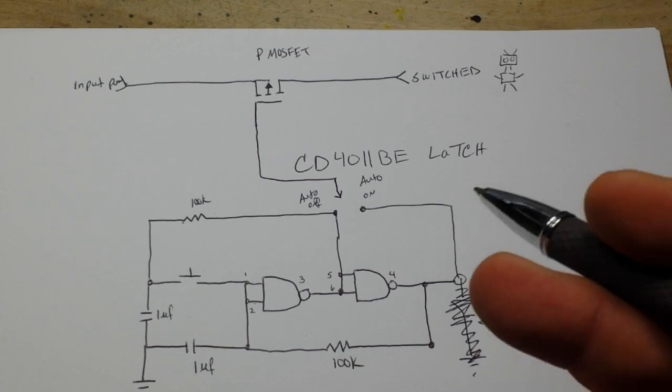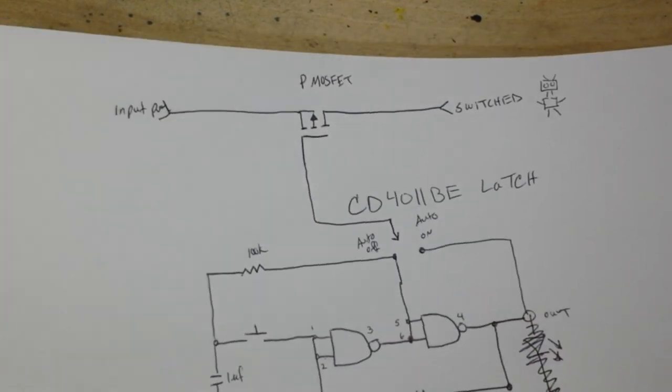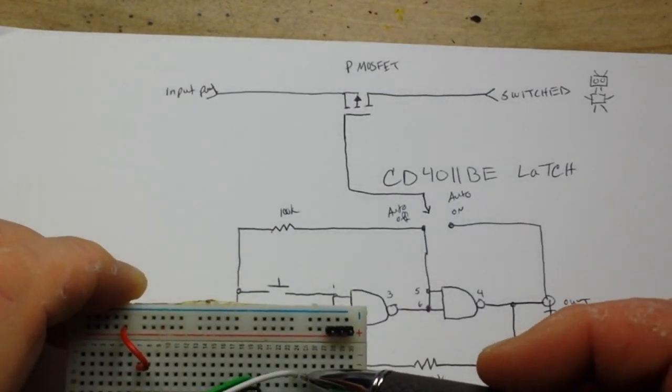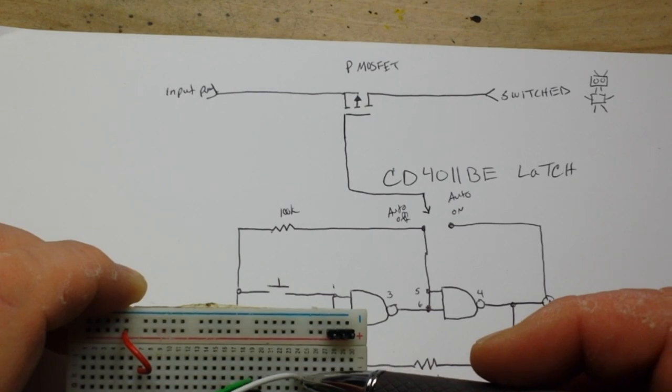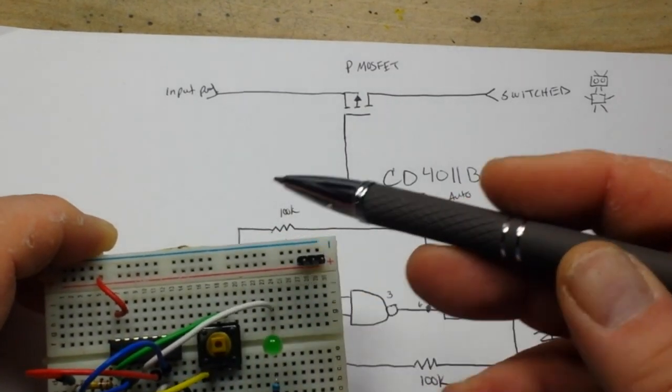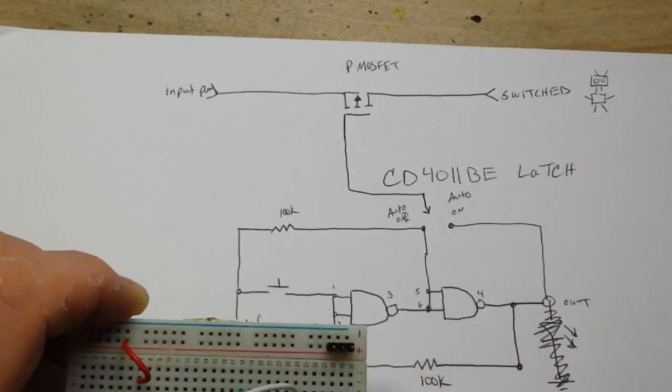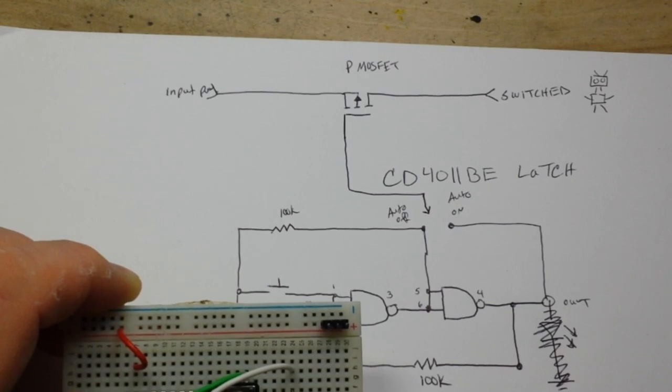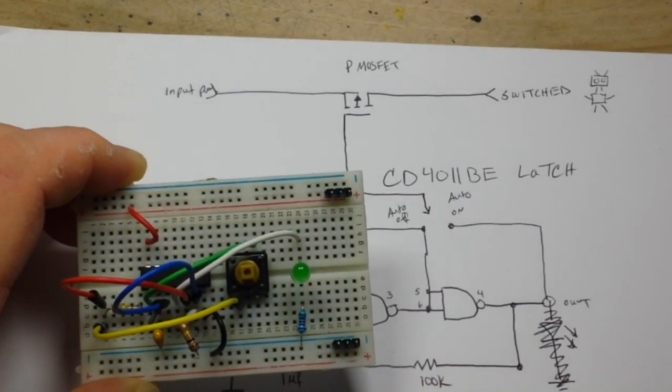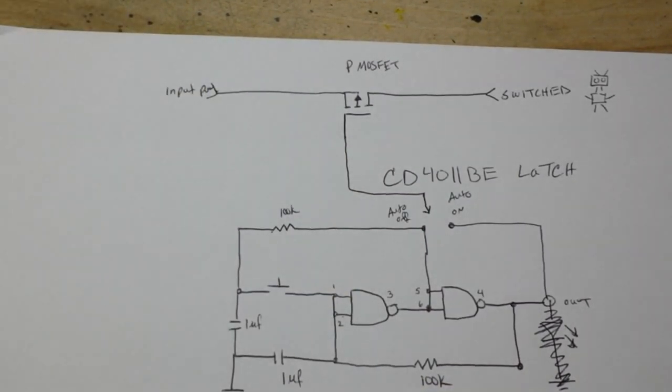Don't have a p-channel MOSFET in stock here so I can't show you how this works, but basically you're just taking this output here and running it up to the MOSFET alongside this one here from the 100k resistor. That's all it is.